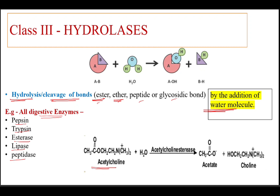If we see this example: acetylcholine, when a water molecule is added in the presence of the enzyme acetylcholinesterase, it is broken down into acetate plus choline. This enzyme is an example of a hydrolase because there is cleavage of the bond by the addition of a water molecule.